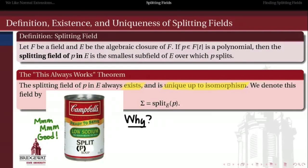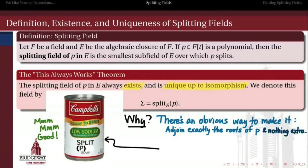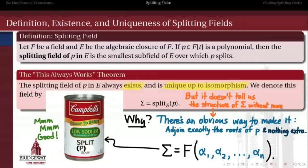Why is the 'always works' theorem true? The easiest way to think about it is that there's an obvious way to construct a splitting field: the splitting field is exactly the field containing all of the roots of our polynomial and no more. So let's just adjoin exactly the roots of P — alpha₁ through alphaₙ — to our base field F. This always gives us a splitting field that's unique up to isomorphism for P. But while this construction isn't very surprising, what's interesting is that it doesn't tell us what the structure of that field is. It's still a rich question to ask what the elements of the splitting field look like, and this will consume us for the rest of the semester.